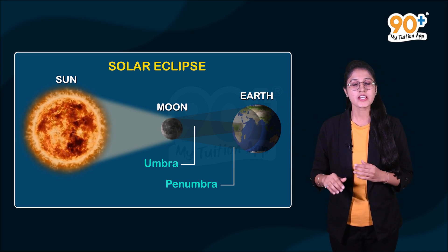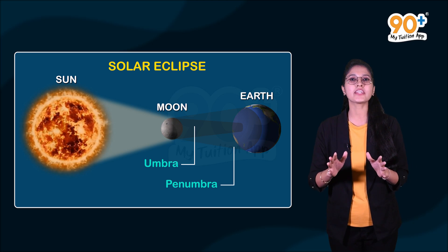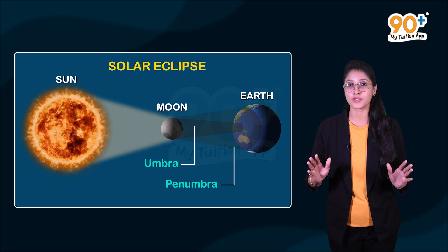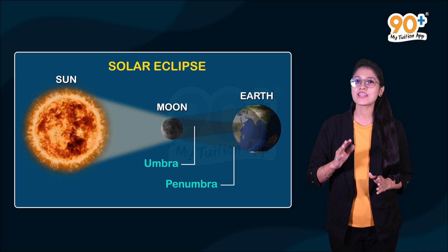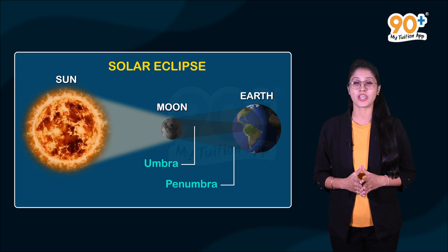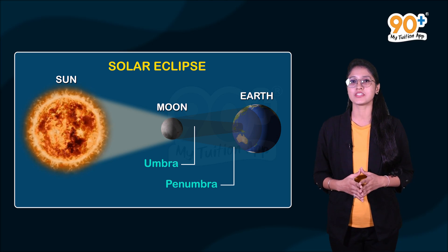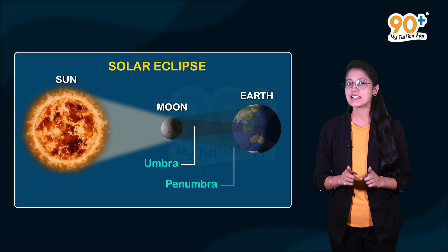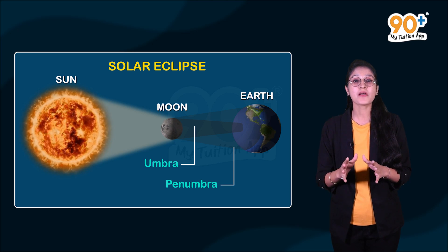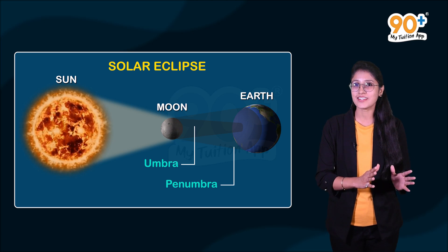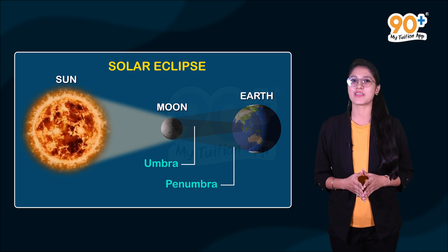You know what? After the new moon day, the illuminated part of the moon increases each day. Similarly, after full moon day, the sunlit part of the moon which is visible from the earth decreases day by day.